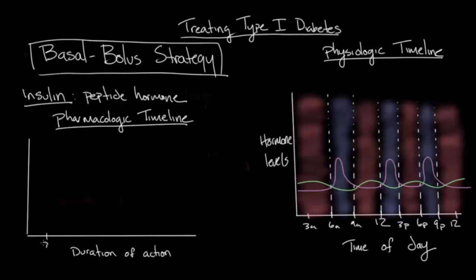This will be in hours, so we'll have 3, 6, 9, 12, 15, 18 hours here. One of the three main groups of insulins that can be given when treating type 1 diabetes are known as the rapid-acting insulins. Their pharmacologic timeline looks something like this. These rapid-acting insulins usually take about 15 minutes to 30 minutes before they start working, and their duration of action will last somewhere around 4 to 6 hours.